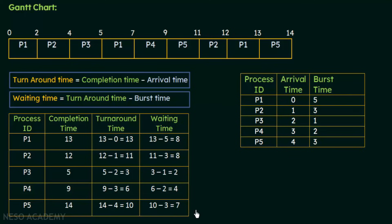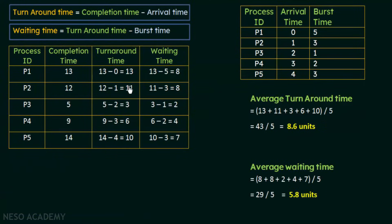Now it is easy to calculate the averages. The average turnaround time is (13 + 11 + 3 + 6 + 10) divided by 5, which gives 43 divided by 5, that is 8.6 units. The average waiting time is (8 + 8 + 2 + 4 + 7) divided by 5, which gives 29 divided by 5, that is 5.8 units. We have found the average turnaround time and average waiting time for processes p1 to p5 following round robin scheduling with time quantum of 2 units and given arrival times.